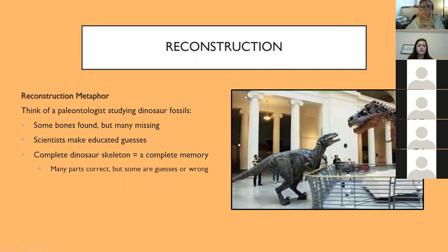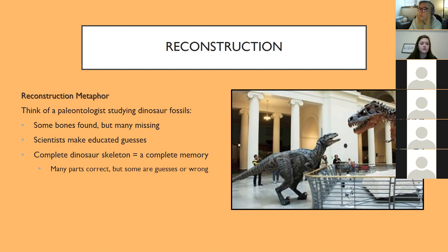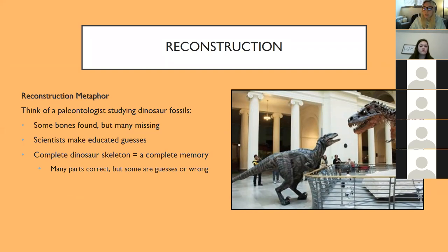One way to think about this is to think of a paleontologist — the scientists that study dinosaur fossils. When you think about reconstruction, you can imagine it as reconstructing a dinosaur skeleton. Those paleontologists find some bones, but many are missing, and they fill in the gaps with what they already know, making an educated guess about what the entire picture looks like. So the complete dinosaur skeleton is like a complete memory — many parts are correct, but some are guesses we've filled in, and some of it is just wrong. This is a nice way to think about memory as reconstructing something.